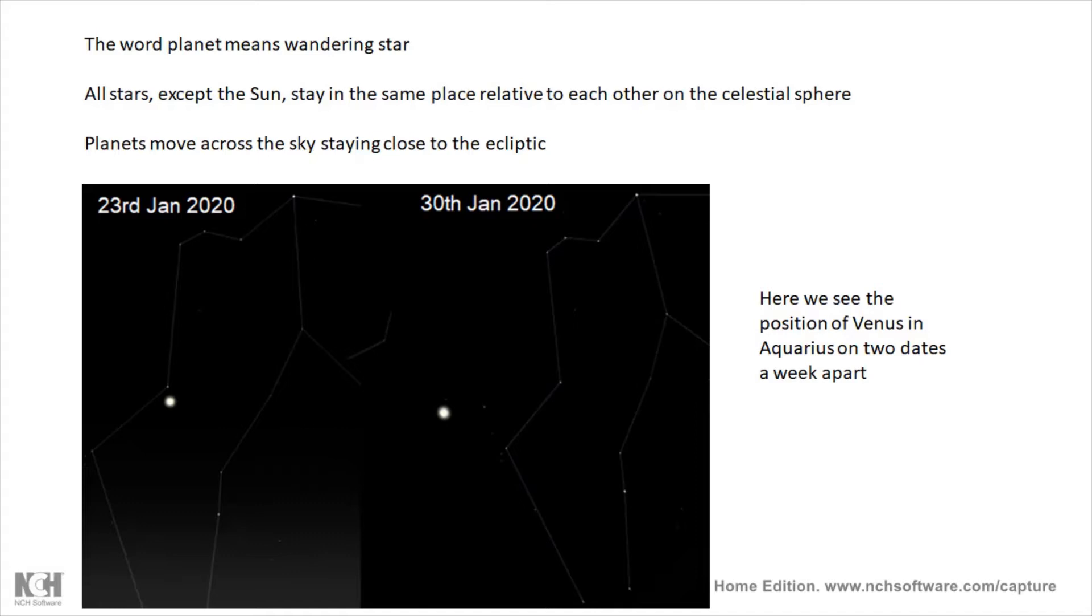There are some stars that will wander across the sky, well because they're not stars, they are planets, and they will wander across the sky staying close to the ecliptic and they'll move relative to all the stars on the celestial sphere.